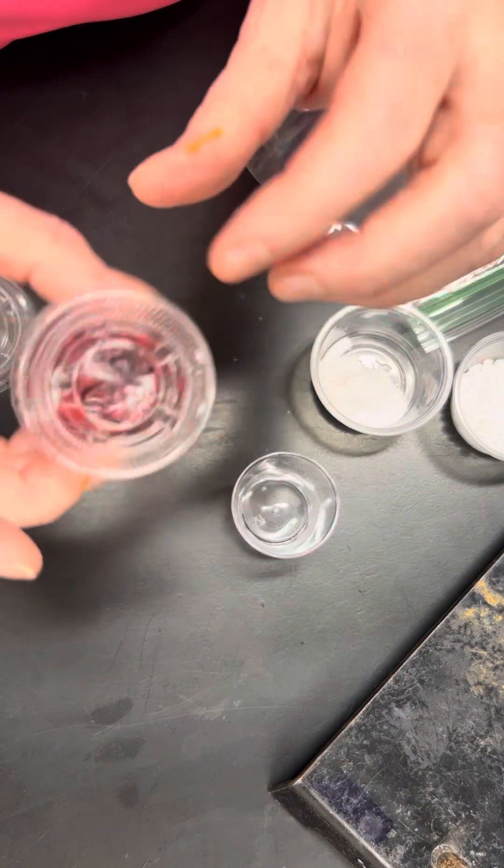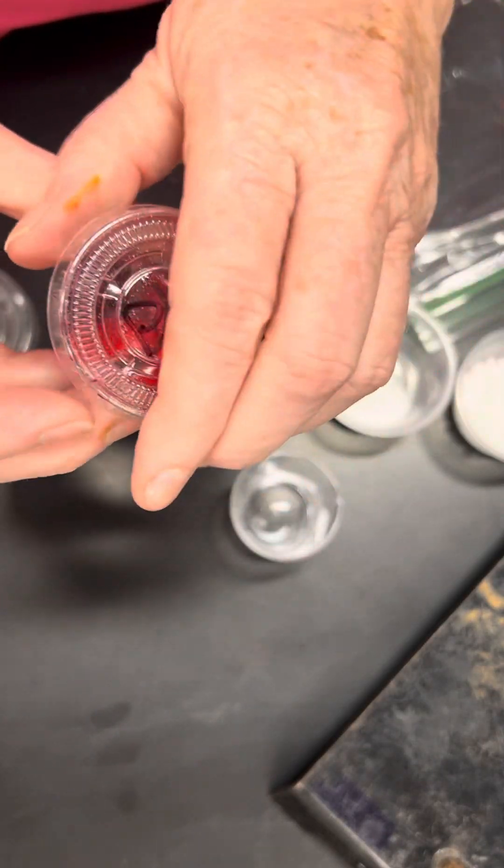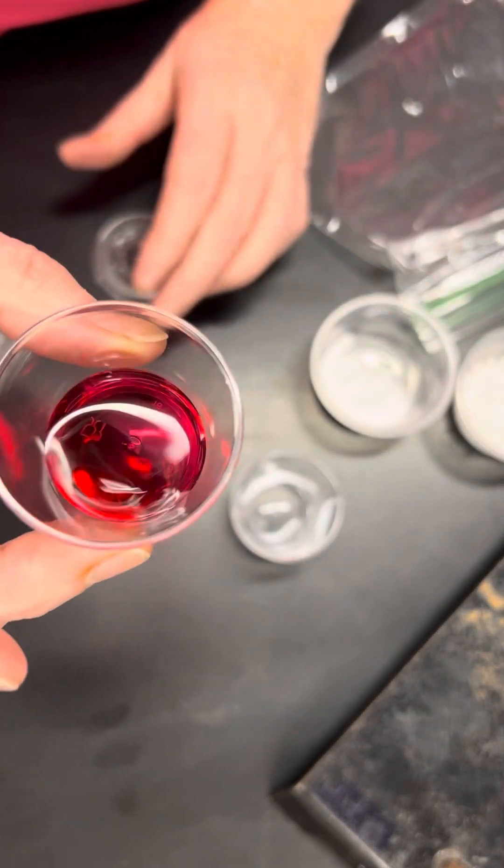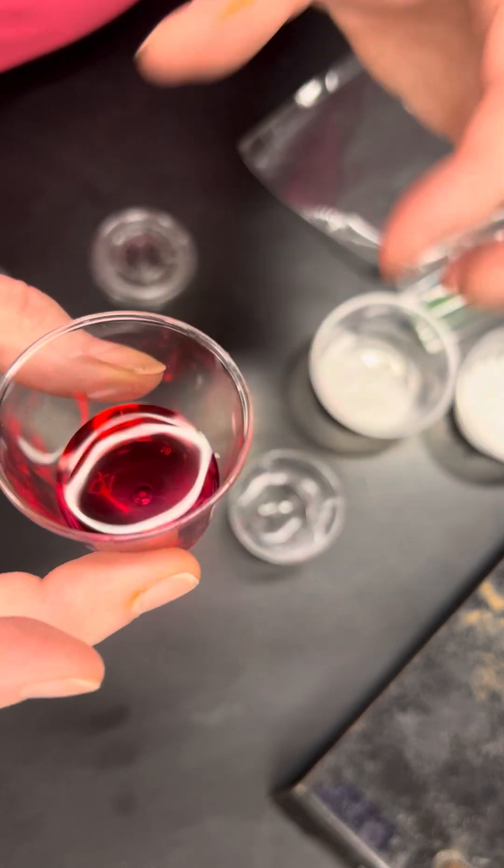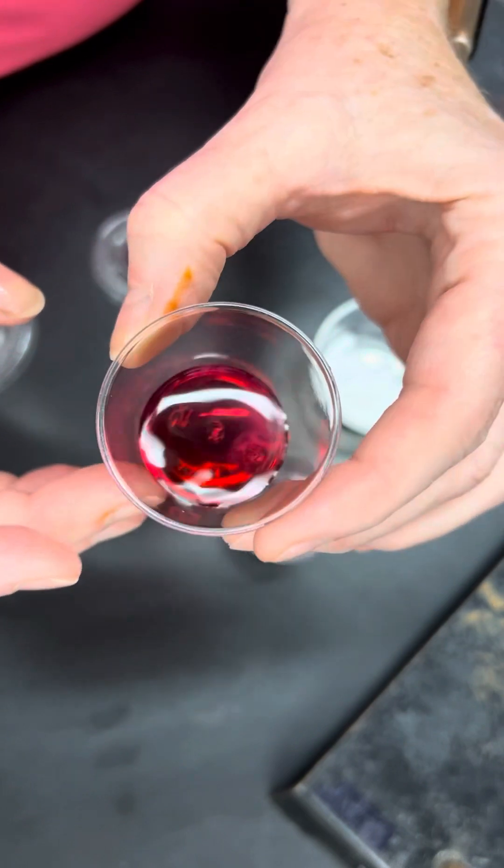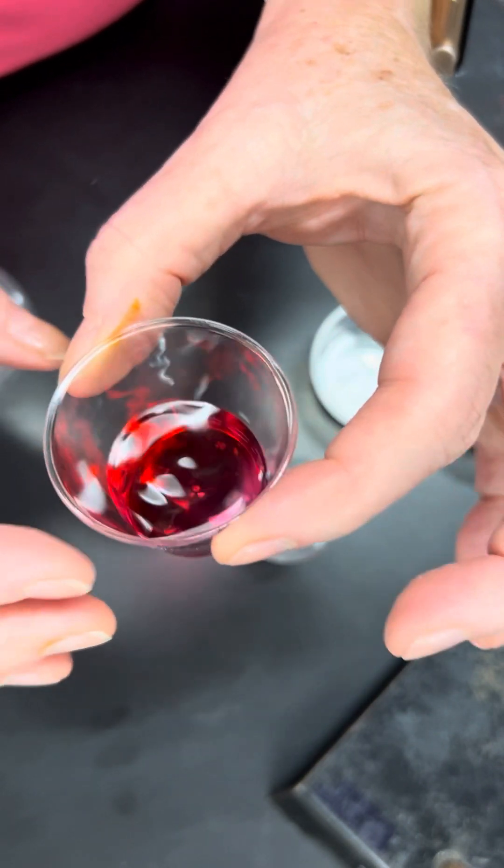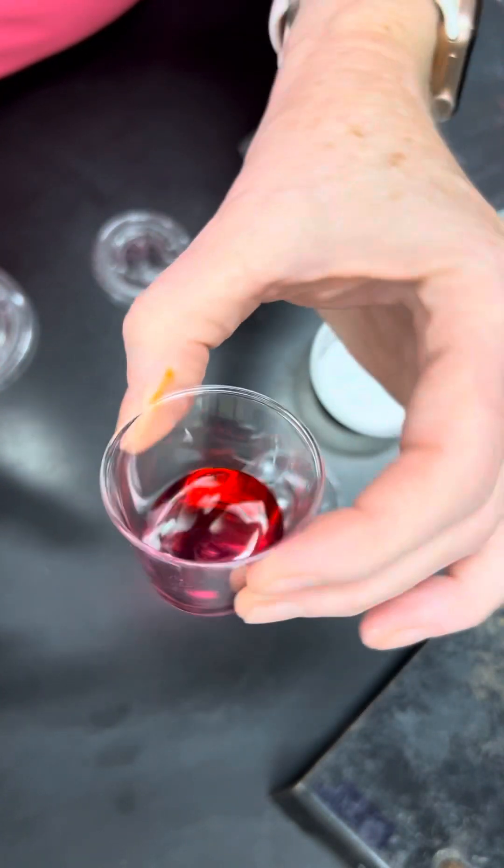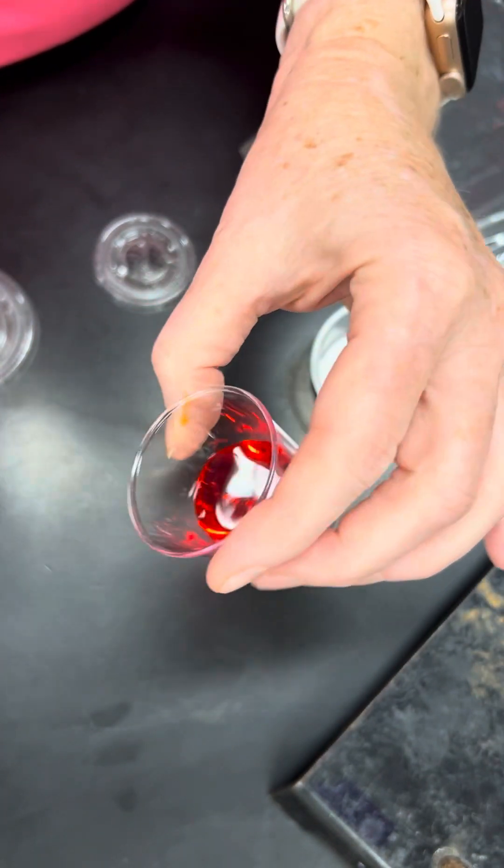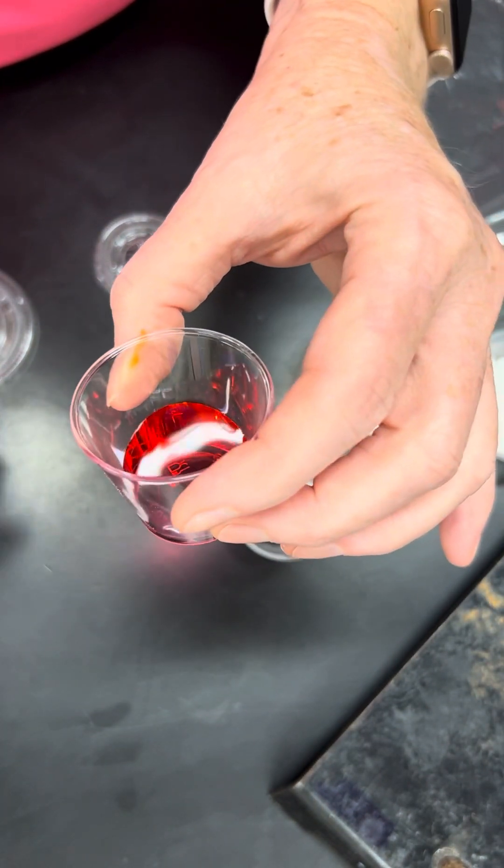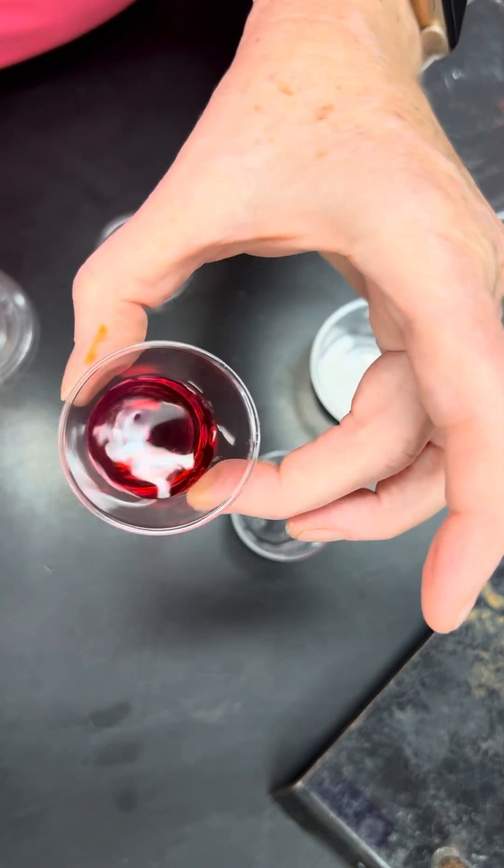The next substance is PR or phenol red. Phenol red is a liquid. It is red colored, kind of a dark pink almost or very light red. It is very thin and liquidy, not thick like honey. It pours very easily and readily. This is also toxic to humans.